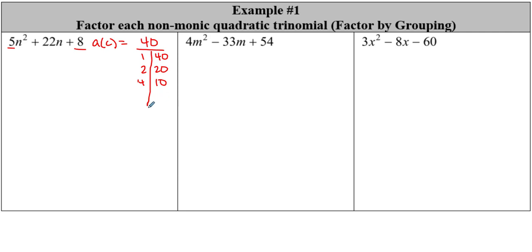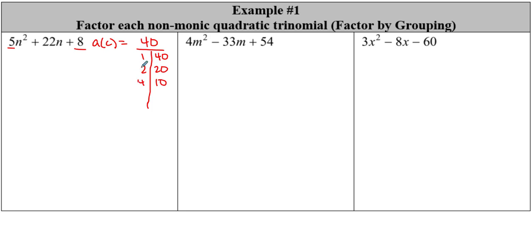We need two numbers to add up to 22. We've got a plus and a plus, so we're going to end up with a plus and a plus. Two numbers that add up to 22 — looks like I found it: 2 and 20. Let's go ahead and rewrite this. The first term drops down, and the middle term we split using this sum. So we got plus 2n plus 20n, then we drop down our C term.